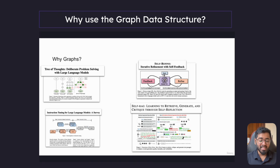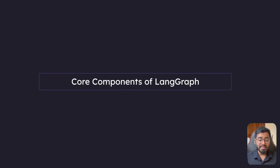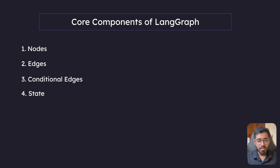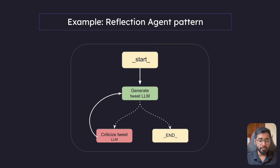That is it for this section. In the next section, we will see what are the core components of LangGraph. In this section, we will look at the core components of LangGraph. There are four core components: nodes, edges, conditional edges, and state.